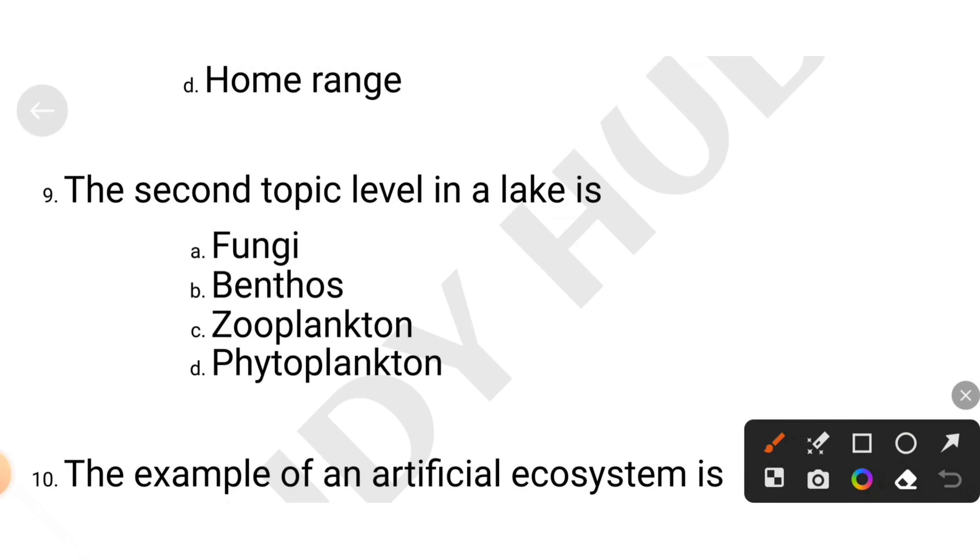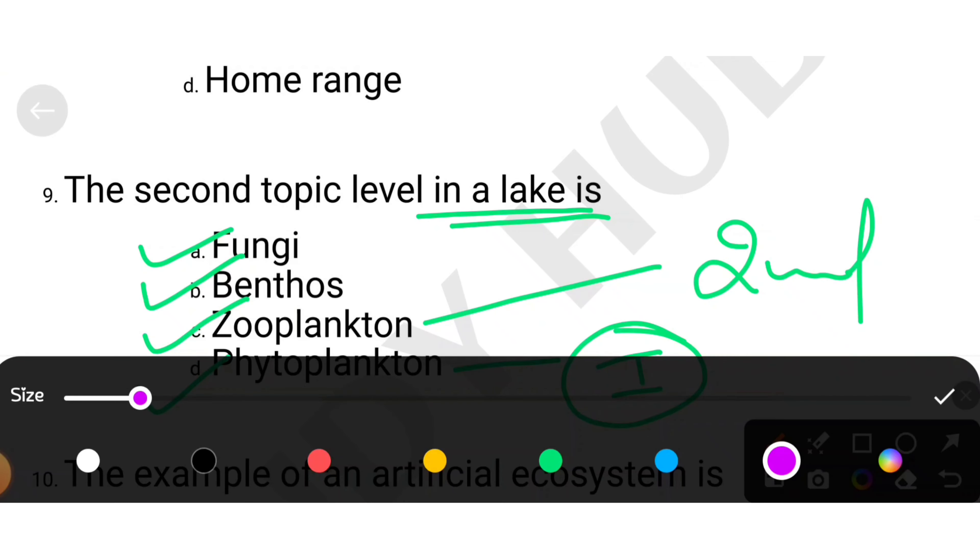The second trophic level in a lake is fungi, benthos, zooplankton, or phytoplankton. What happens in a lake? What happens in phytoplankton? First trophic level occupies. Then zooplankton is second. What happens in zooplankton? Second place occupies.